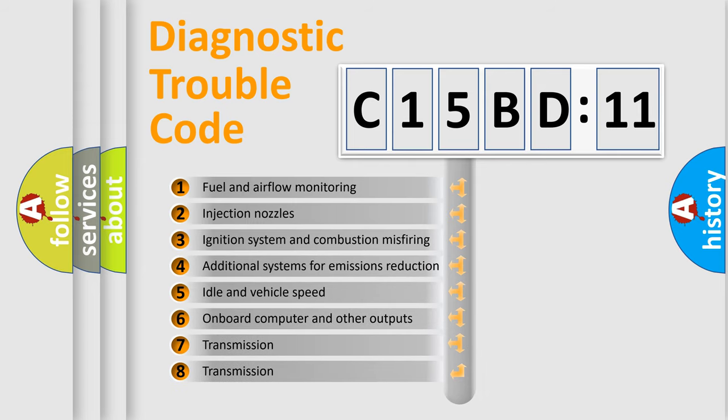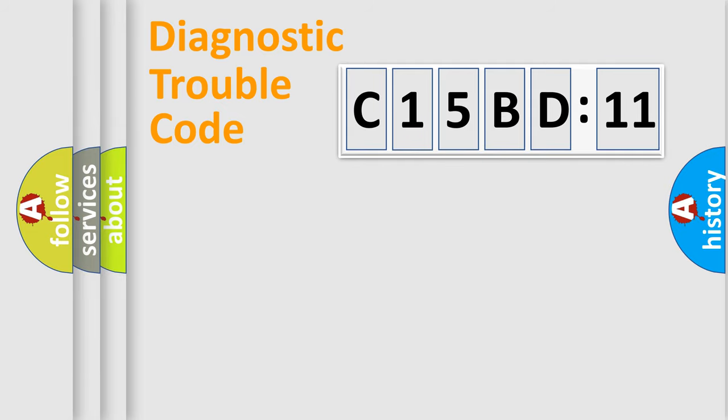The third character specifies a subset of errors. The distribution shown is valid only for the standardized DTC code. Only the last two characters define the specific fault of the group.